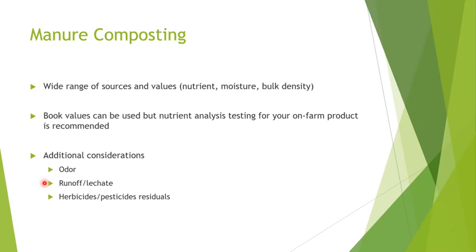It's a pretty specific case, but it's something to be aware of — people have found that compost made from certain manures prevented produce from growing because these herbicides persisted through the manure and composting process.